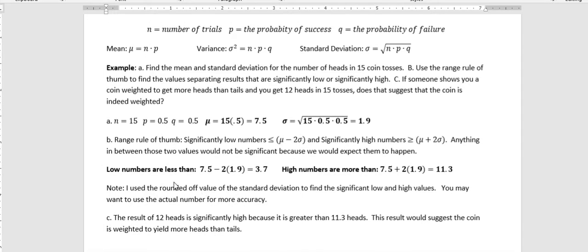So the low numbers, by that I mean significantly low numbers, are 7.5 minus 2 times the standard deviation, which is 3.7. And the high numbers are 7.5 plus 2 times the standard deviation, which is 11.3. So anything between 3.7 and 11.3 are not significant. Anything less than 3.7 or anything greater than 11.3 is.